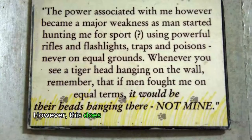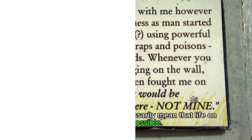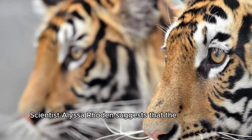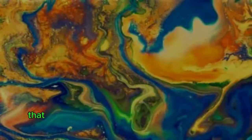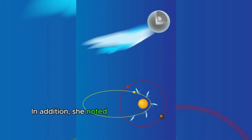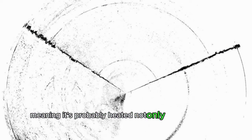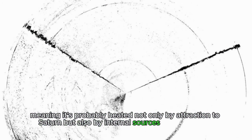However, this does not necessarily mean that life on Mimas is impossible. Scientist Alyssa Rhoden suggests that the lack of tiger bands can be explained by the fact that the possible ocean formed relatively recently on a cosmic scale. In addition, she noted that its elongated orbit allowed Mimas to be well heated, so it probably has a warm liquid ocean. Meaning it's probably heated not only by attraction to Saturn, but also by internal sources like Enceladus.